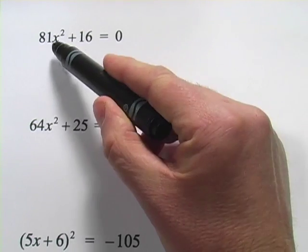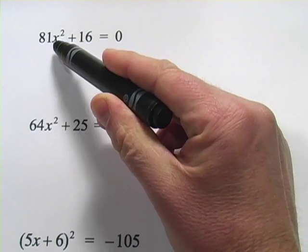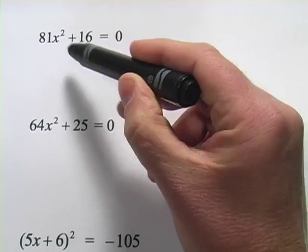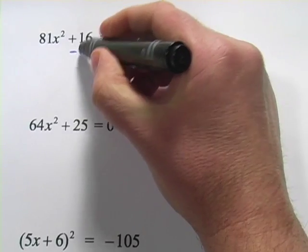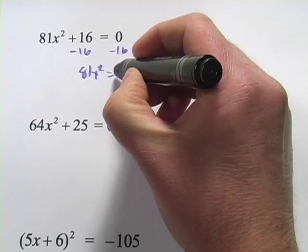We've got 81 times x squared plus 16 equals 0. I want to solve for x by taking the square root, so I'm going to get that x squared term alone. I'll start by subtracting 16, so I get 81x squared equals negative 16.